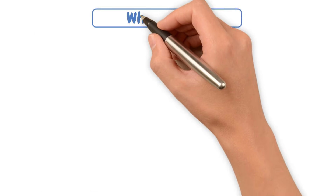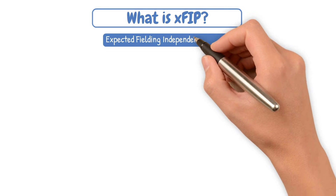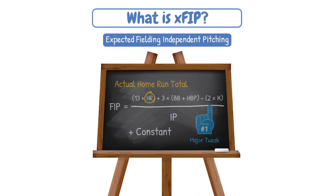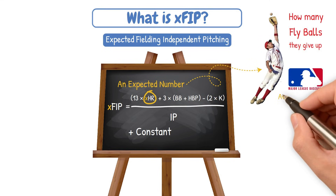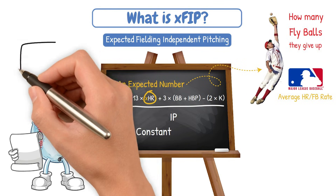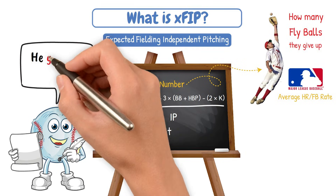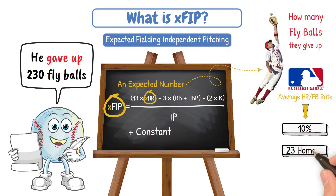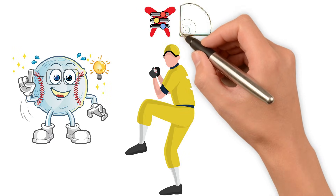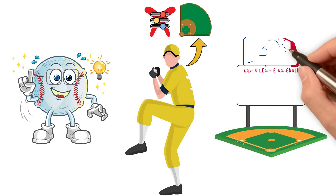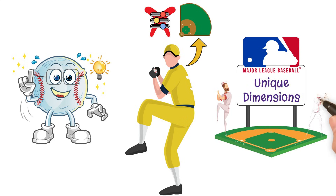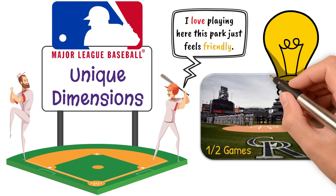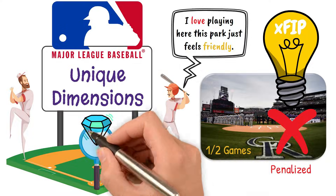Let's dive into what XFIP entails. XFIP stands for Expected Fielding Independent Pitching. It's the same formula as FIP, but with one major tweak: it replaces a pitcher's actual home run total with an expected number, based on how many fly balls they give up and the League Average Home Run to Fly Ball Rate. So instead of saying this guy gave up 21 home runs, XFIP says he gave up 230 fly balls — with a League Average Home Run to Fly Ball ratio of 10%, that should have been 23 homers. The idea being that a pitcher cannot control the park in which they are pitching in. Every single big league park has unique dimensions — some are more pitcher-friendly, and some are more hitter-friendly. If you pitch for the Rockies and have to play half your games in one of the most hitter-friendly ballparks, XFIP says you shouldn't be penalized for that when trying to determine your true value.